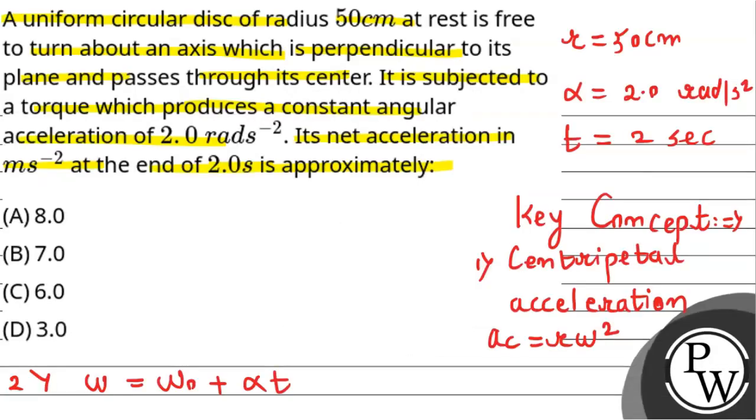According to the question, there will be two types of accelerations: one tangential acceleration and second one will be centripetal acceleration. So we need a third formula for tangential acceleration. This can be given by at equals r into alpha, where r is radius.